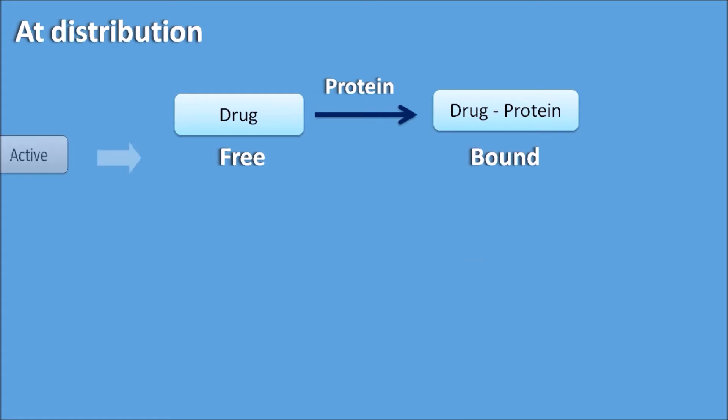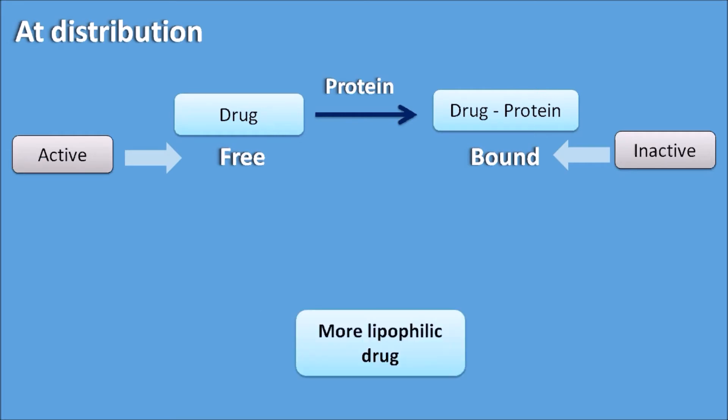First of all, at distribution, how a drug is going to be bound with a protein. Any drug can interact with protein and form a drug-protein complex. So a drug can exist as free form as well as bound form, and a free form of the drug is active form and bound form of the drug is the inactive form. Now more lipophilic drugs can cause the protein displacement of the drug, increasing the free drug concentration in the plasma. This increased free drug concentration can be either metabolized or excreted, or it can also increase the drug toxicity if it is having a narrow therapeutic window.